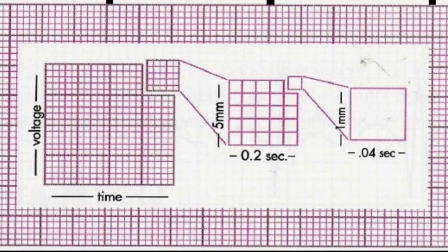When you zoom in, you can see the horizontal line represents time and the vertical line represents voltage. The dark and light intersecting lines form large and small squares. The light vertical lines that help form the small squares are one millimeter apart and represent 0.04 seconds at a standard paper speed of 25 millimeters per second.